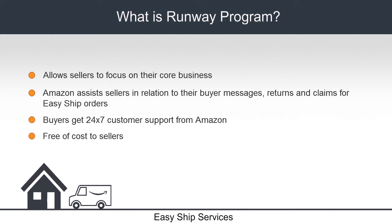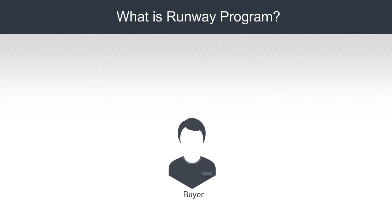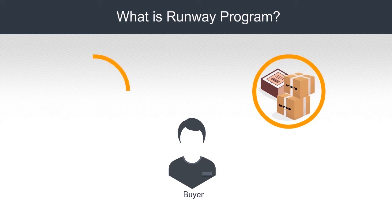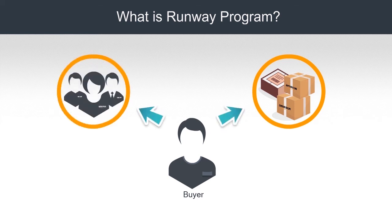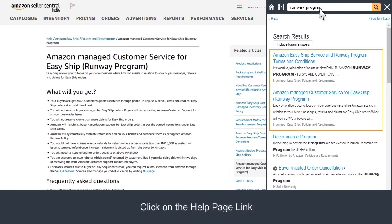This program is offered by default to all Easy Ship sellers. Please note, the Runway program is only applicable for Easy Ship orders that a seller receives. For the orders that are covered under the Runway program, buyers will contact Amazon for any cancellation request, and Amazon will be able to cancel the order provided the order has not yet been shipped. To know more about the Runway program, search with the keywords Runway Program on Seller Central and click on various help page links.